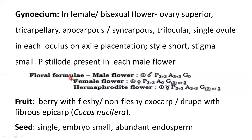Looking at the floral formulae: in the male flower, it is actinomorphic, unisexual male; perianth is 3+3; androecium is 3+3; gynoecium is zero. In the female flower, it is actinomorphic, unisexual female; perianth remains 3+3; androecium is zero; gynoecium is tricarpellary — three within brackets means syncarpous, underlined below means it is a superior ovary; if apocarpous, there is no bracket. In case of bisexual flowers, it is actinomorphic, bisexual; perianth remains 3+3; androecium is 3+3; gynoecium is three, within bracket with underline or without bracket.